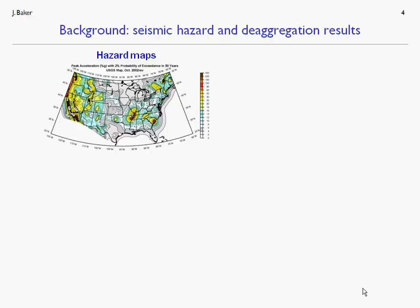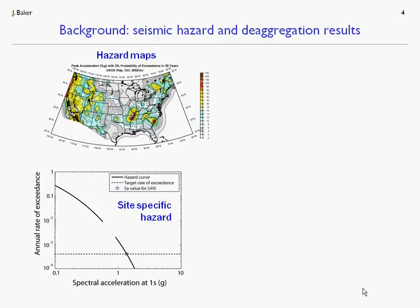As background, the seismic hazard information you may be most familiar with is the seismic hazard maps produced by the U.S. Geological Survey. These map design peak ground acceleration or spectral acceleration values with a specified probability of exceedance in some time window. For a specific site, we can look at spectral accelerations of all amplitudes at a particular period. In the lower left figure, I've plotted spectral acceleration at one second versus the annual rate of exceedance, and the map shows just the amplitude at some specific rate of exceedance associated with a target probability.